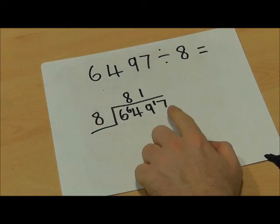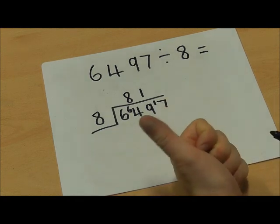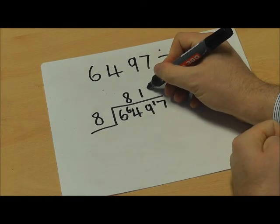I'm now going to see how many times 8 goes into 17. So 1 times 8 is 8. 2 times 8 is 16, so it goes in twice.